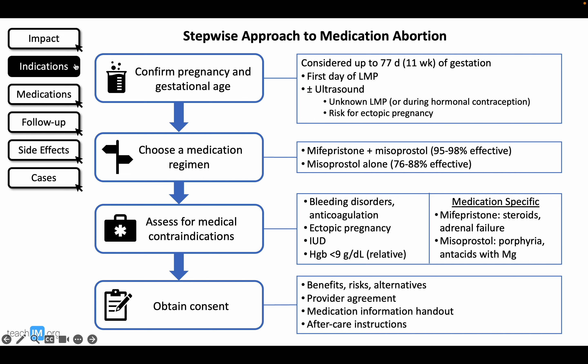In summary, the steps to take prior to prescribing medication abortion are to confirm pregnancy, estimate gestational age, choose a medication regimen, rule out contraindications, and obtain informed consent. Medication abortion can be considered in pregnancies up to 11 weeks gestation, and the combination of mifepristone and misoprostol is more effective than misoprostol alone. In some states, patients must wait one to two days after counseling to receive the prescription, so be aware of local laws. Thank you so much for listening, and we hope you feel equipped and empowered to provide abortion to your patients.